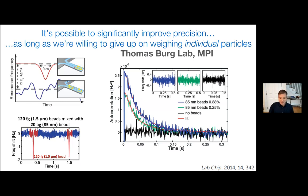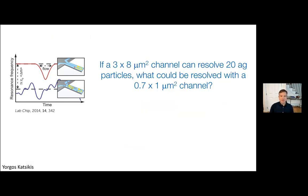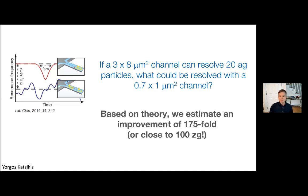Tomas's channels are 3 by 8 microns in cross section. The question we've been thinking about is: if a 3 by 8 micron channel can resolve 20-attogram particles, what could we do scaling down to our smaller channels? Yorgos has done a lot of theory and modeling on this scaling, and calculated that we ought to see a 175-fold improvement in resolution. Dividing that in, that puts us close to 100 zeptograms. This is a conservative estimate — Tomas's paper describes going much lower than 20 attograms in principle — but practically, 100 zeptograms should be achievable, which is enough given the 1-attogram difference we're looking at.